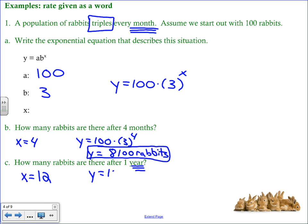So we plug that into our equation. 100 times 3 to the 12th and this is going to be a big number. We end up with 53,144,100 rabbits.